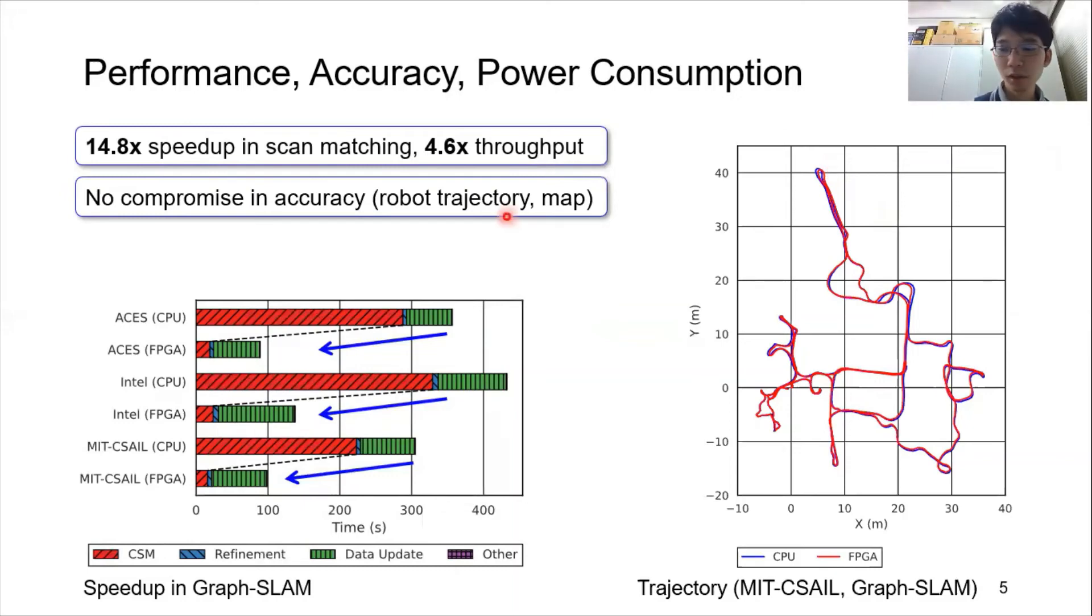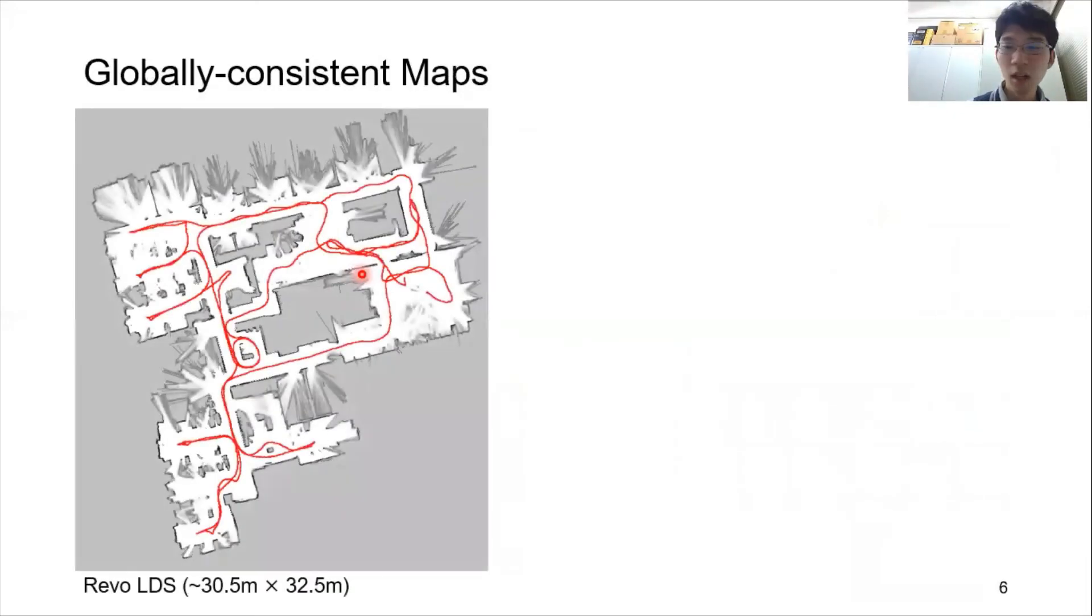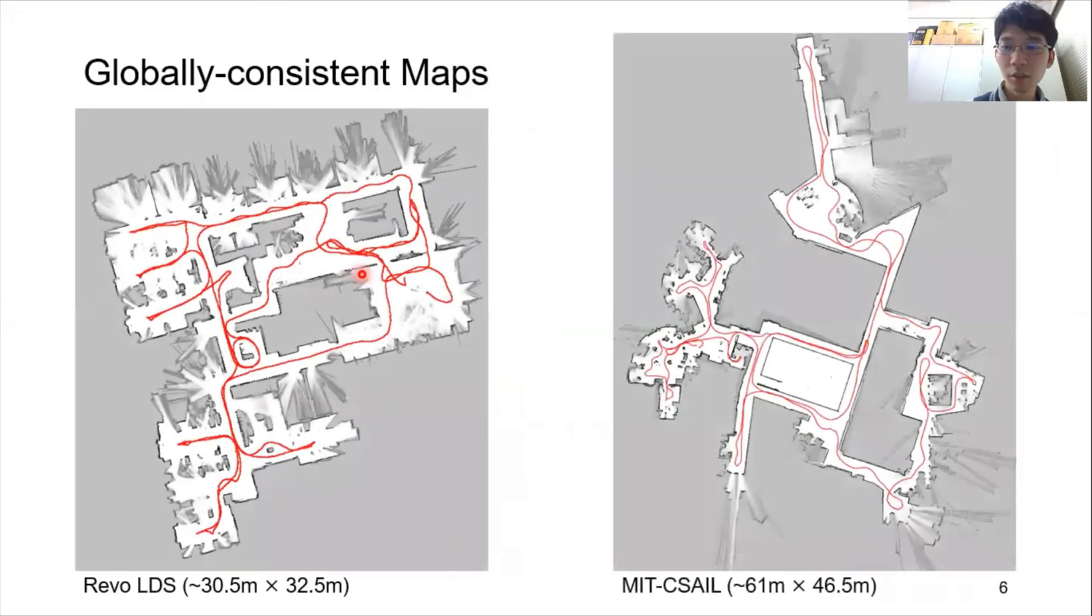And the power consumption of the entire FPGA board was around 2.4 watts. We can see that our FPGA-based SLAM system generates globally consistent and highly accurate grid maps with no distortions.